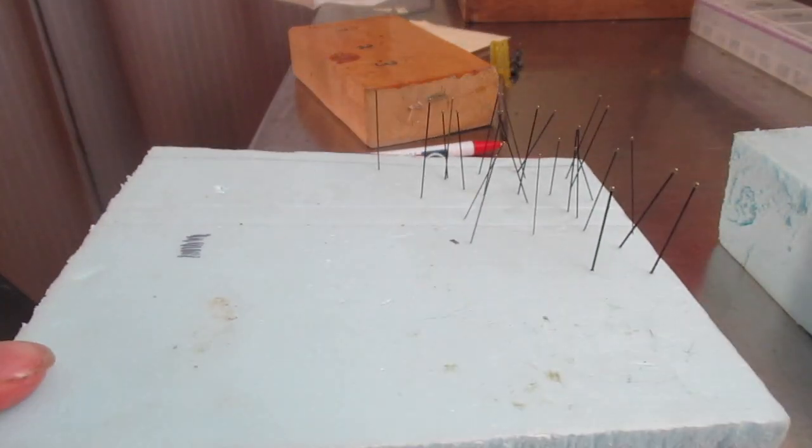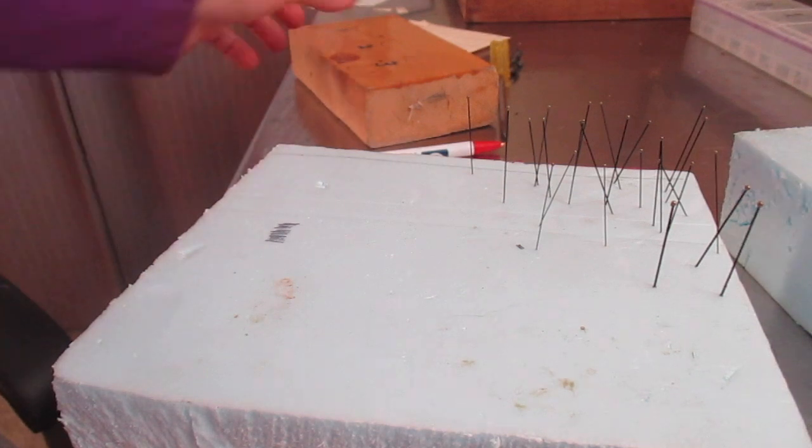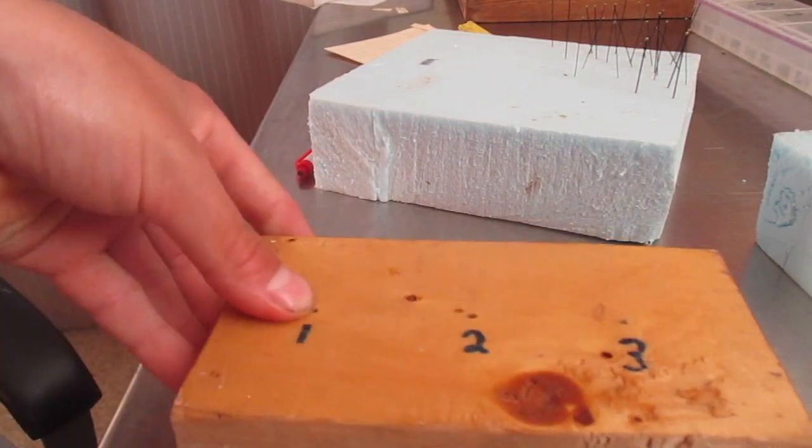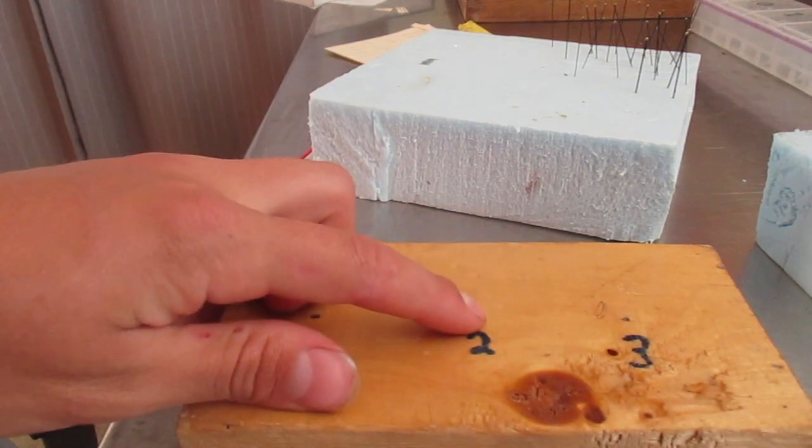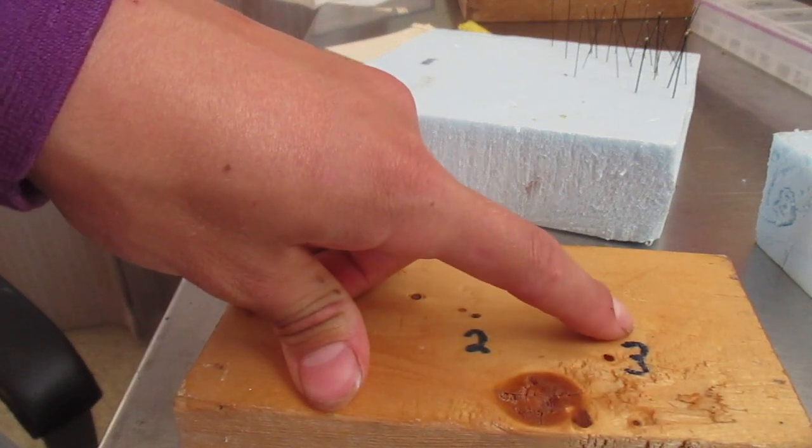So first you're going to need some blue board and some pins or foam, whatever. Some people use cork board and then a pinning block. The number one hole is an inch in drilled in. The number two hole is a half inch in and then the number three hole is a quarter inch in.